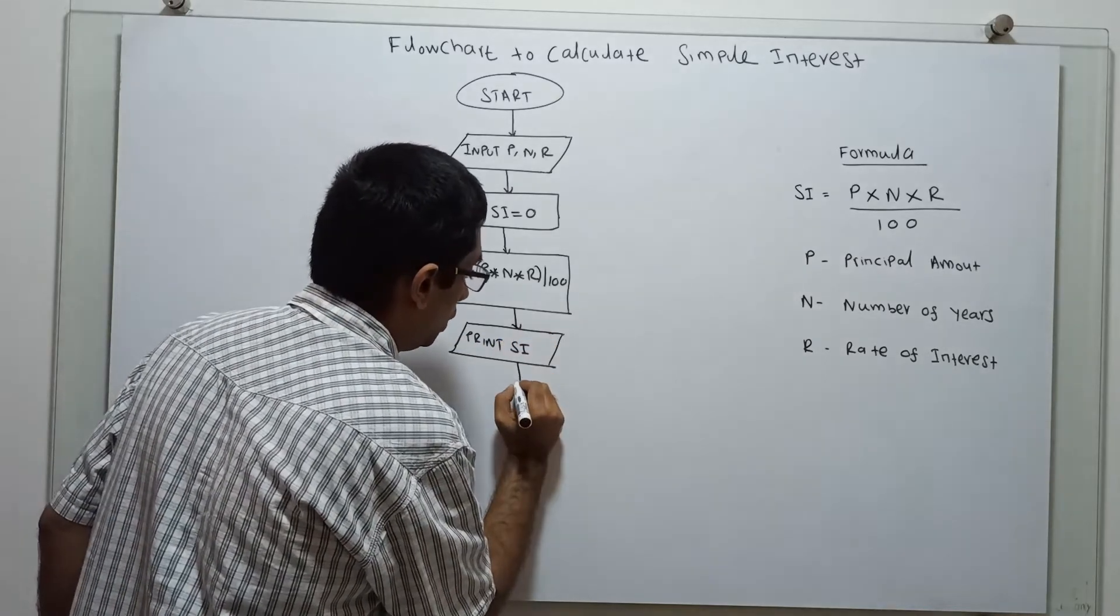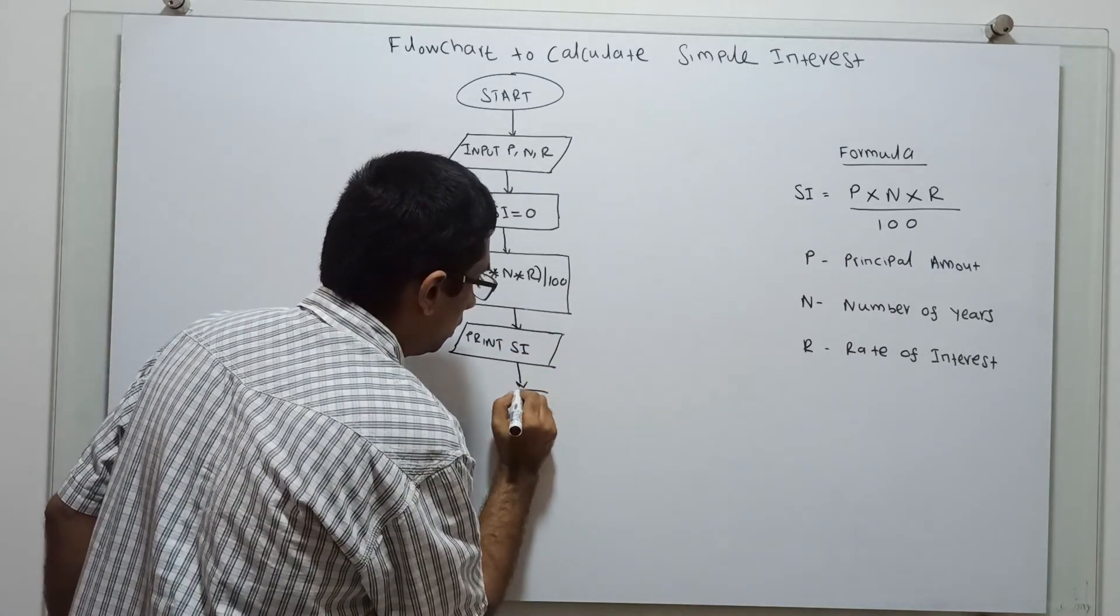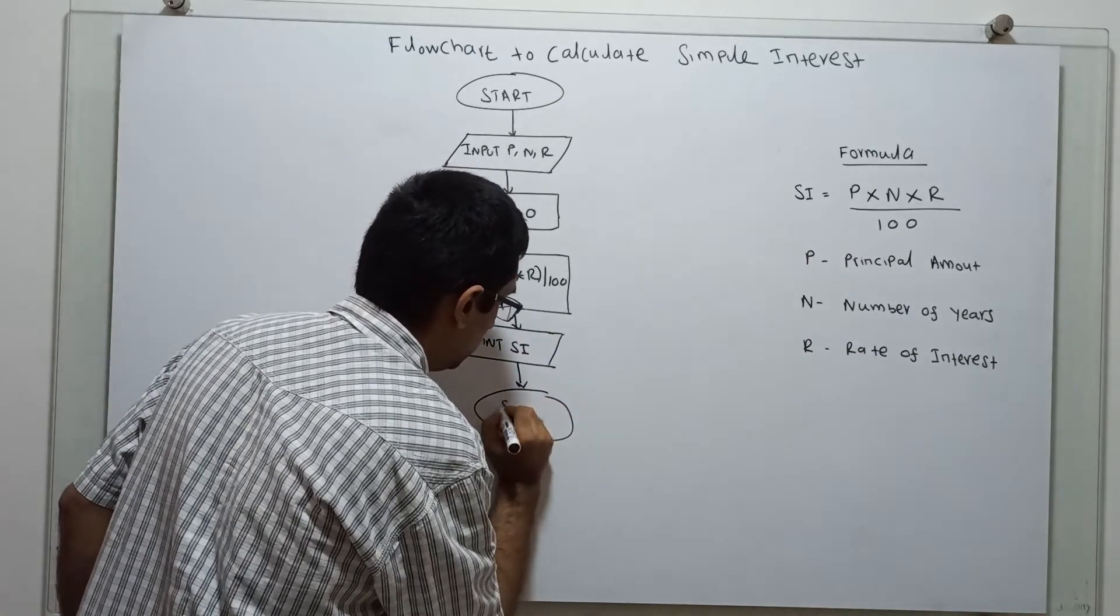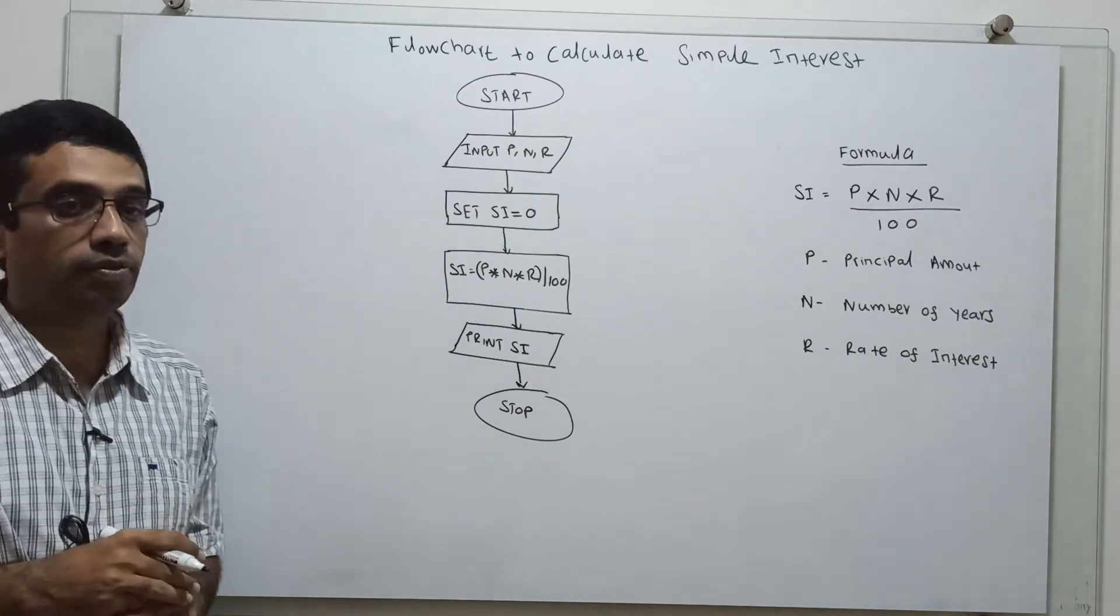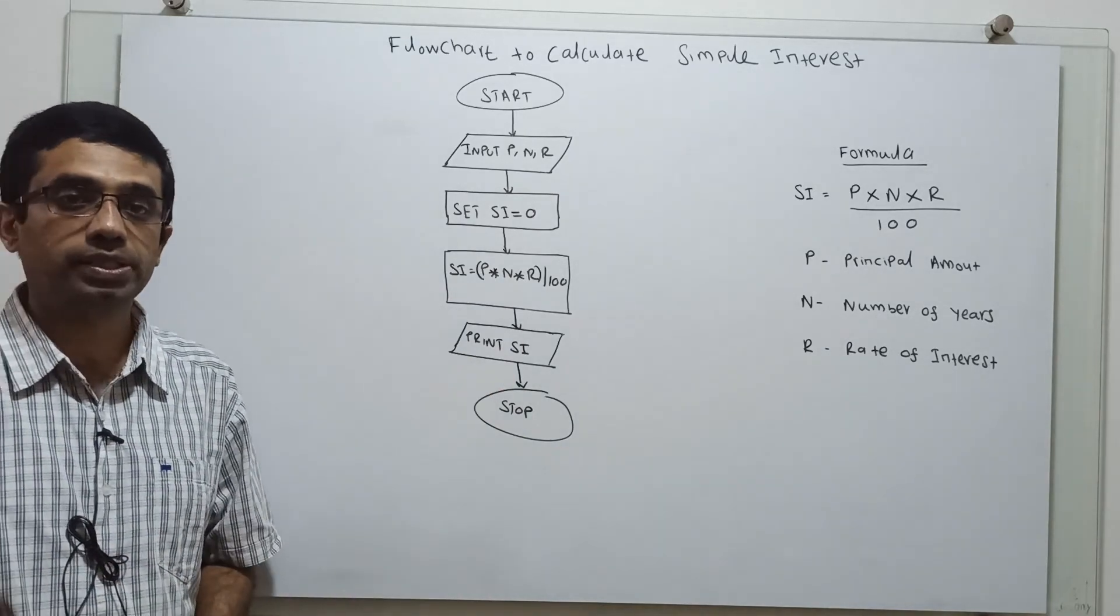So finally, the end of the flowchart, which is stop. Okay. So this is the flowchart to calculate the simple interest.